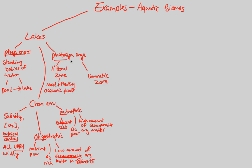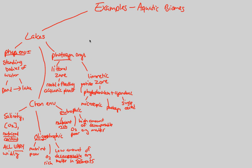In the limnetic zone, which is further out in the water, we usually don't see rooted or floating plants. Instead, we see phytoplankton — single-celled protists — and cyanobacteria, which are bacteria. Both are microscopic, present in great quantity, photosynthetic, and single-celled. In the littoral zone, real physical plants are either rooted or floating near the shore.